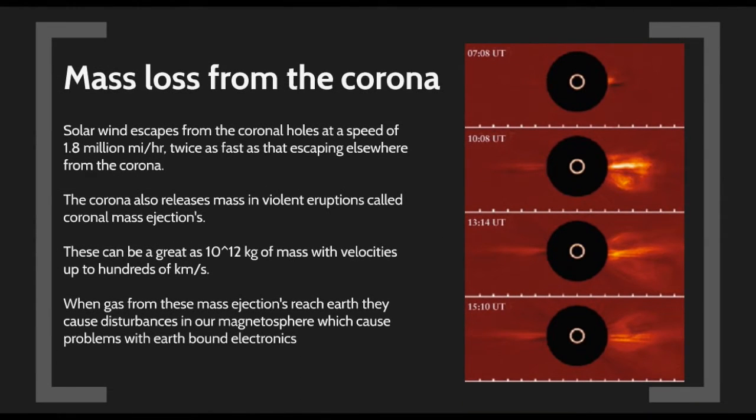Some material escapes in very violent events, but sometimes we get coronal holes where charged particles can leave at 1.8 million miles an hour, twice as fast as they escape from other places. These release mass in violent eruptions called coronal mass ejections, which can be as great as 10 to the 12 kilograms of mass with velocities up to hundreds of kilometers per second. If one is aimed at Earth, it creates havoc on our communications, satellites, and electrical systems.